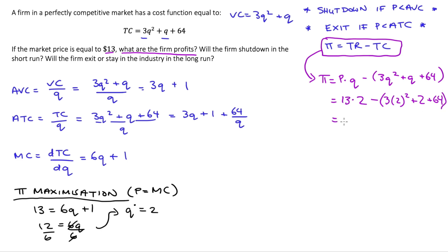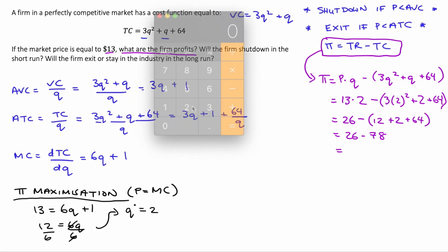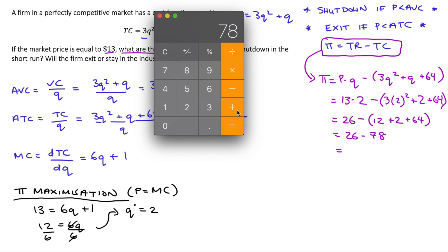So we get 26 minus (12 plus 2 is 14; 64 plus 14 is 78). That gives us 26 minus 78, which equals negative 52. So the firm is making negative profits — a loss of $52.